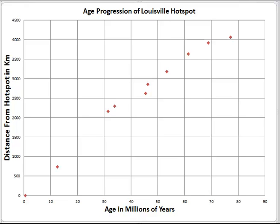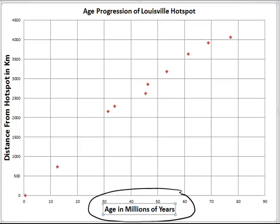The relationship between distance and age along the Louisville track indicates changes in the velocity of the Pacific plate. We've plotted the age of seamounts in the Louisville chain versus their distance from the youngest seamount, which is inferred to be the part of the plate currently over the hot spot. You're going to do this same exercise with the Hawaiian hot spot, using data on the ages of islands and seamounts versus their distance from Kilauea, the active volcano currently over the Hawaiian hot spot. Age is on the x-axis and distance is on the y-axis.